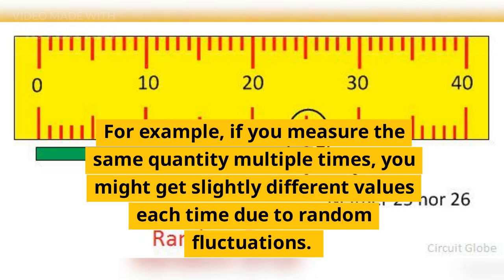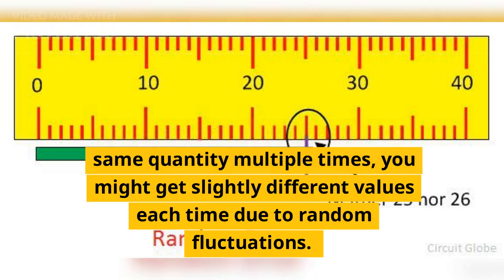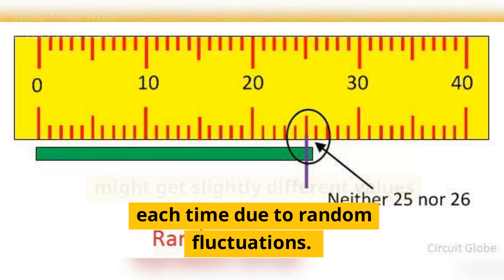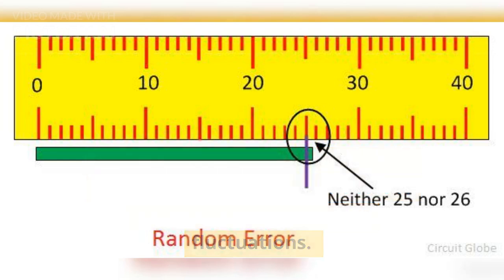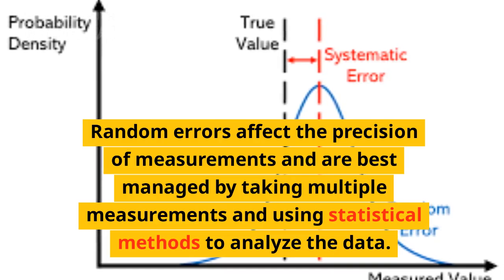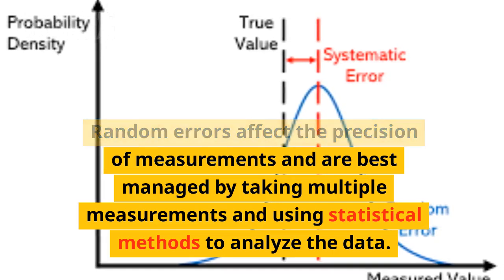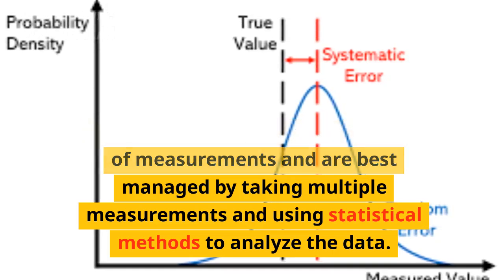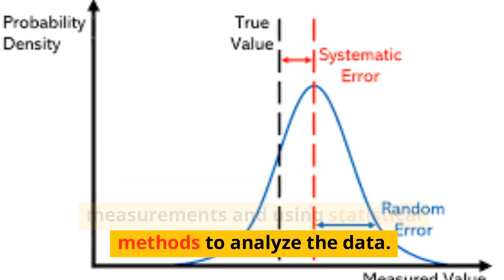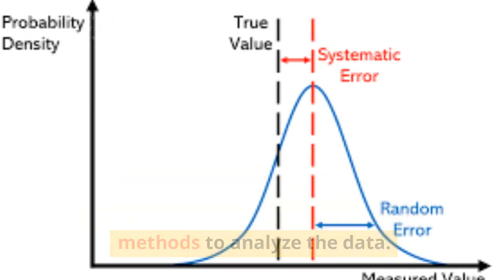For example, if you measure the same quantity multiple times, you might get slightly different values each time due to random fluctuations. Random errors affect the precision of measurements and are best managed by taking multiple measurements and using statistical methods to analyze the data.